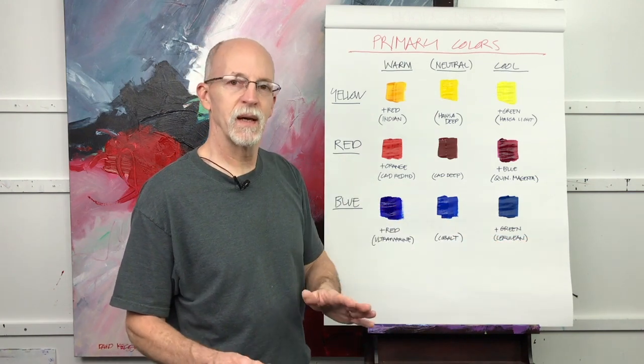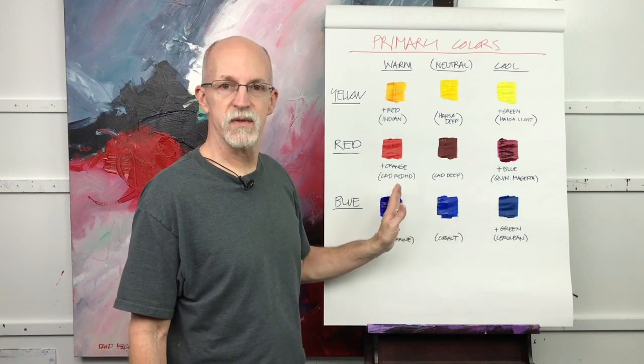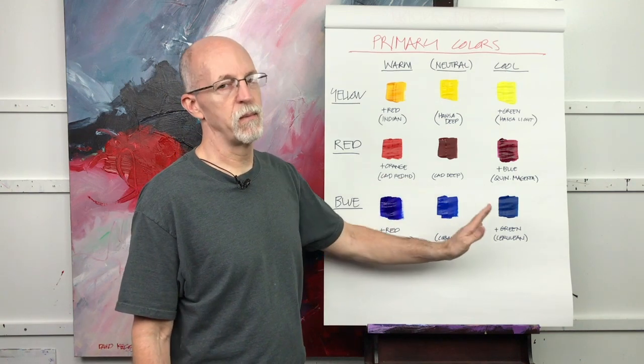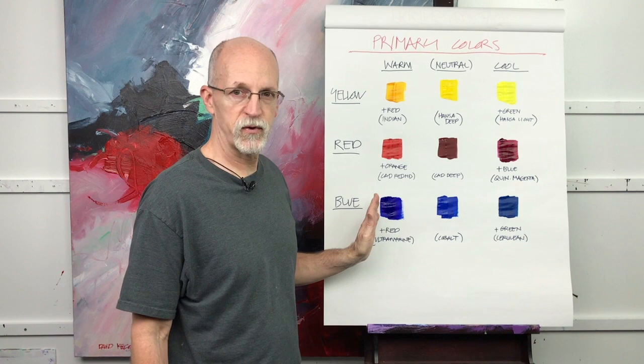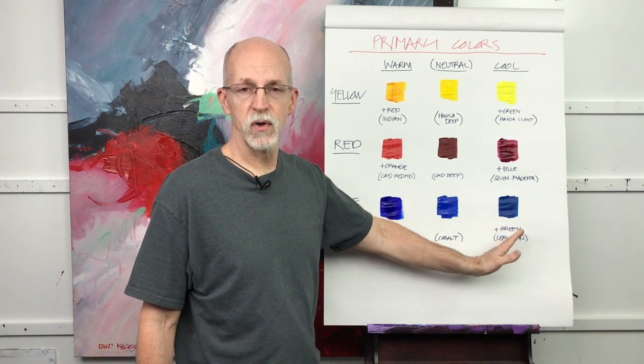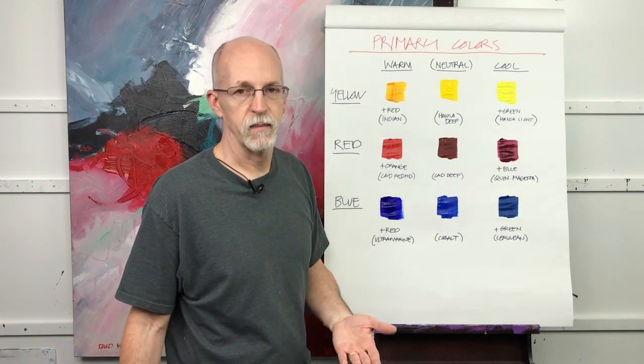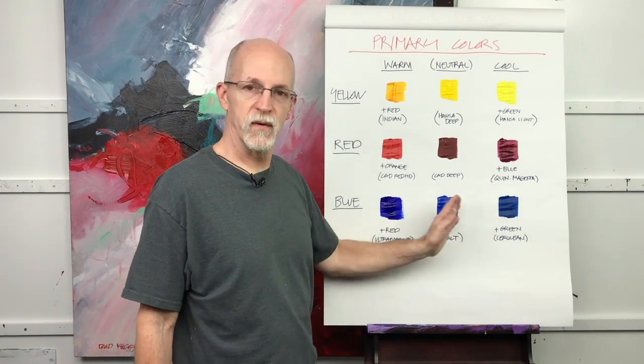So when you're thinking about primary colors, remember with the blues, so many of my students get mixed up with the blue. They don't know that ultramarine has red. They don't know that cerulean blue or Prussian blue or phthalo blue has green in it because they haven't spent enough time studying warms and cools.